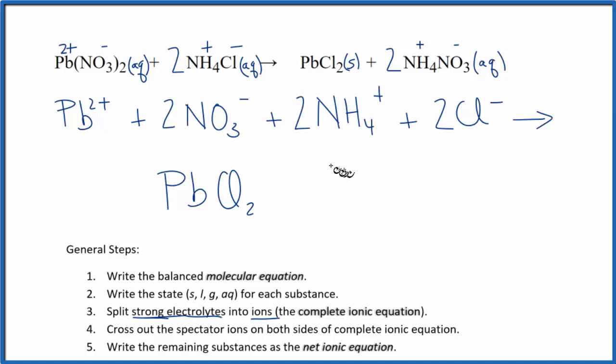And then we have the ammonium ion, NH4+. We have two of those, plus nitrate NO3 minus, and we have two of those. This is the complete or total ionic equation. It's all the ions and the things that we didn't split up as well.